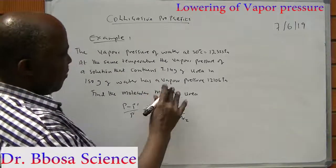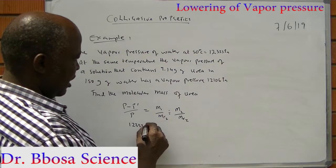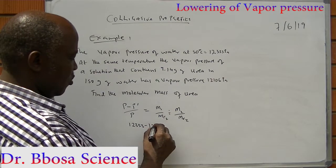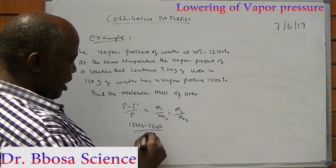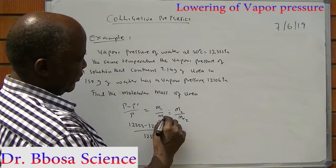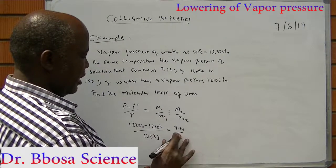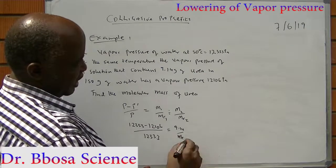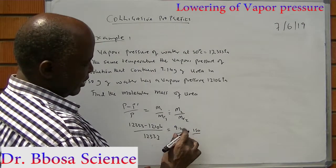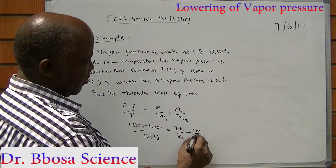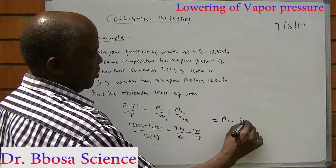The vapor pressure of water is 12,333, minus the vapor pressure of the solution, which is 12,160, over the vapor pressure of water, 12,333, equals the mass of urea, which is 9.14, over the molecular mass of urea, divided by the mass of water, which is 150, over the molecular mass of water, which is 18. When you calculate, you find that MR is equal to 60.